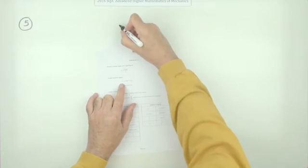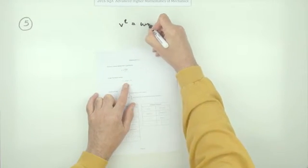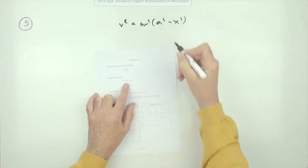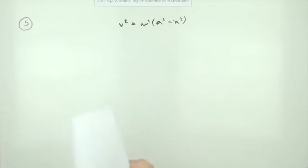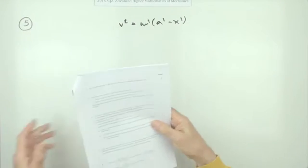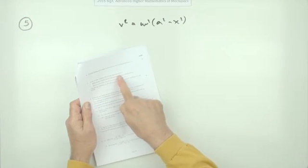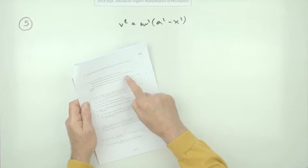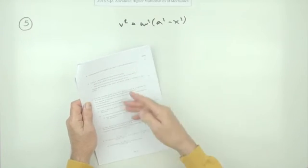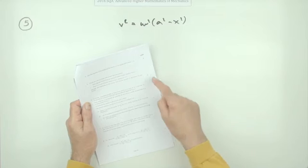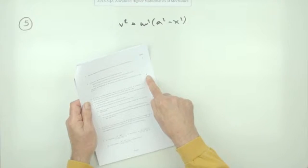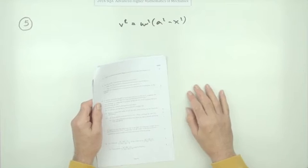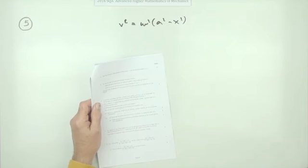So v² = ω²(a² - x²). When you look at this question and it gives you values for v and for x, you realise these five marks are really not about knowing anything special about simple harmonic motion — you're getting five marks for solving simultaneous equations.